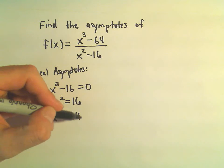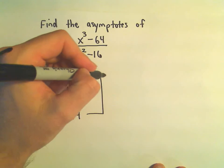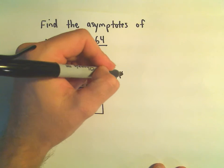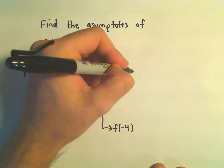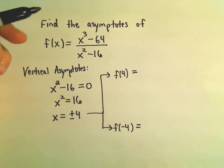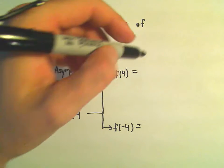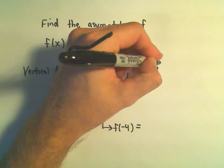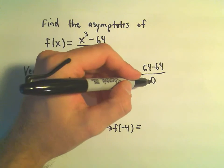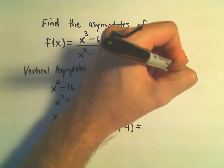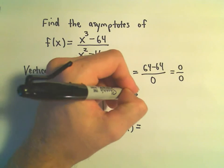And again, these aren't necessarily vertical asymptotes yet, because if we get 0 over 0, that just tells us it's a hole. If we get something non-0 over 0, we'll get a vertical asymptote. So I'm just going to plug them both in and see what happens. So if I plug 4, I would get 4 cubed, which is 64. On the bottom, we know 4 squared minus 16 is 0. So we are getting 0 over 0, and that tells me at x equals 4, there's just a hole in the graph.